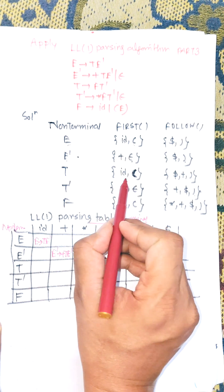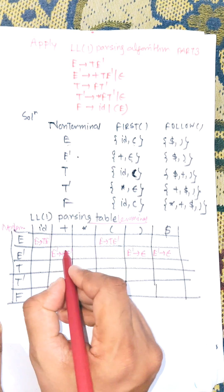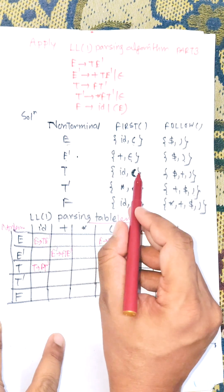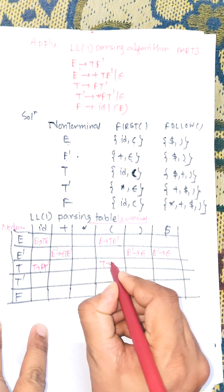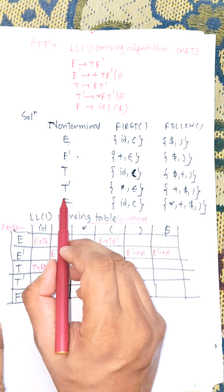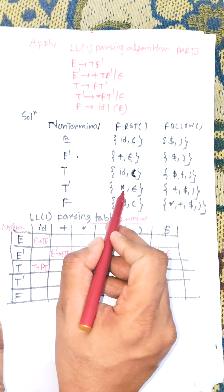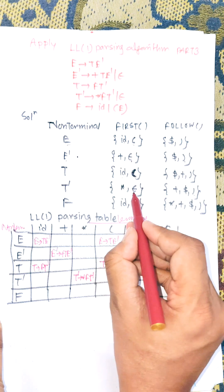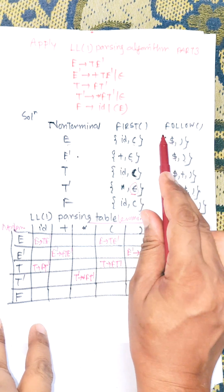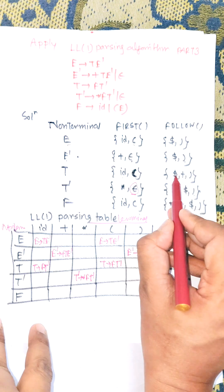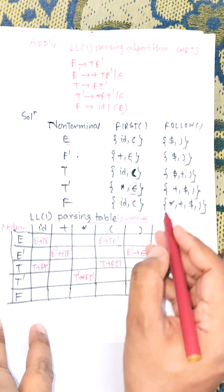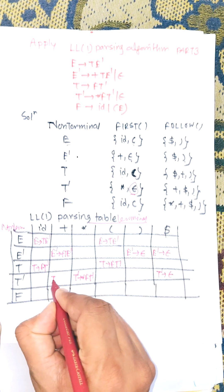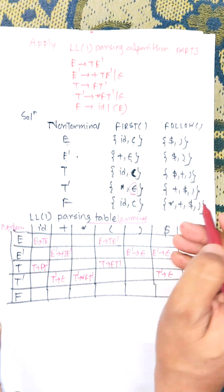For non-terminal T, FIRST(T) is {id, '('}. So T → FT' is applied for id and T → FT' for '('. For T', FIRST(T') contains * and ε. We apply T' → *FT' under *. Since there is an ε, we apply FOLLOW(T') = {$, +, ')'}. So T' → ε is entered under $, under +, and under ')'.